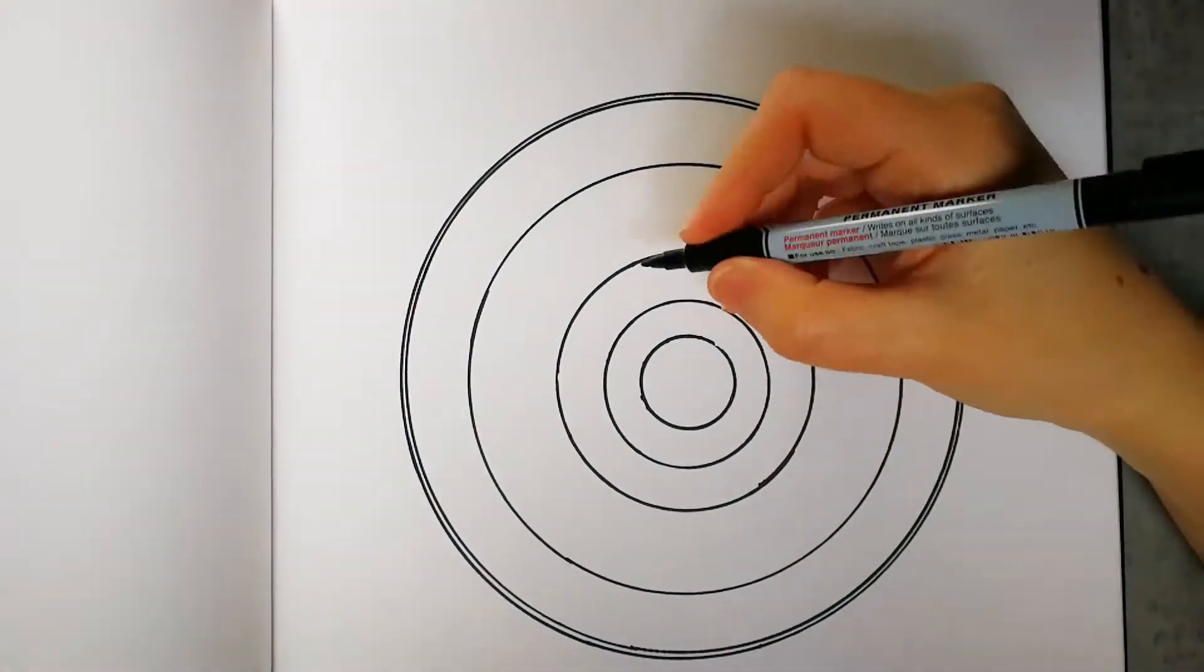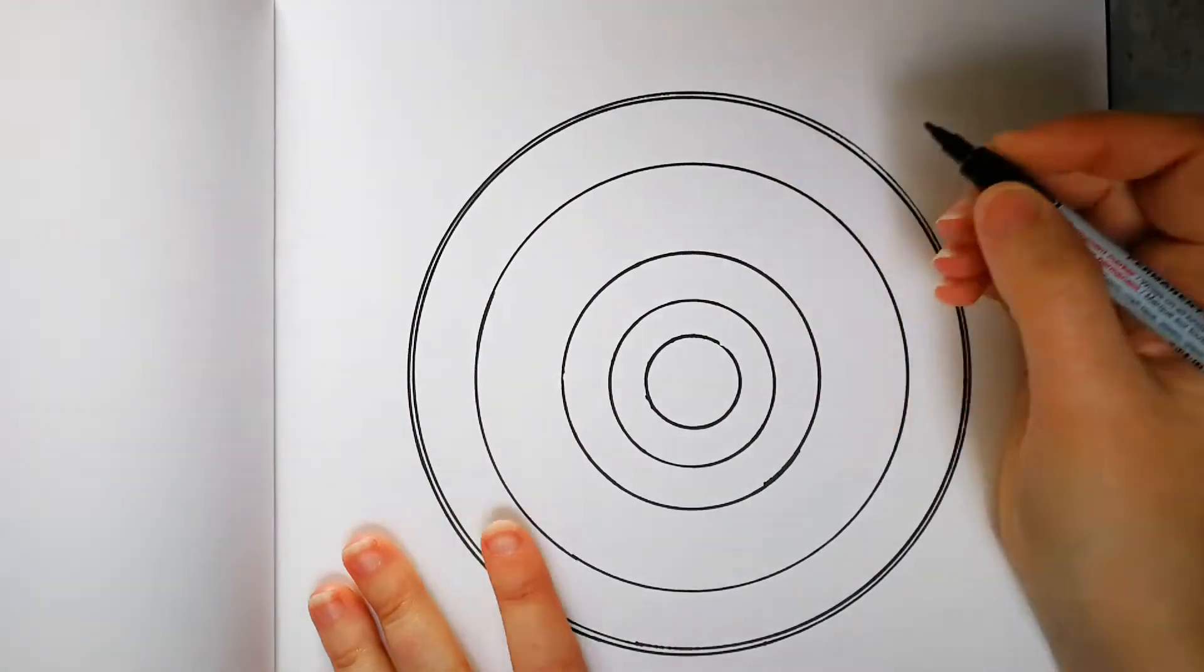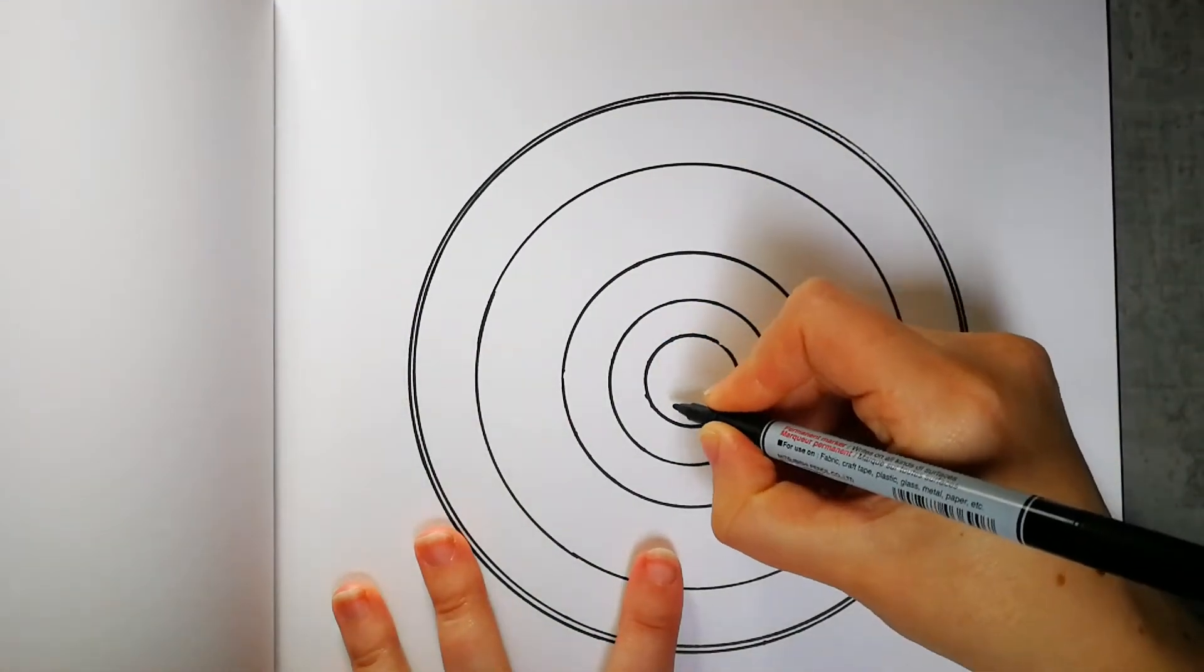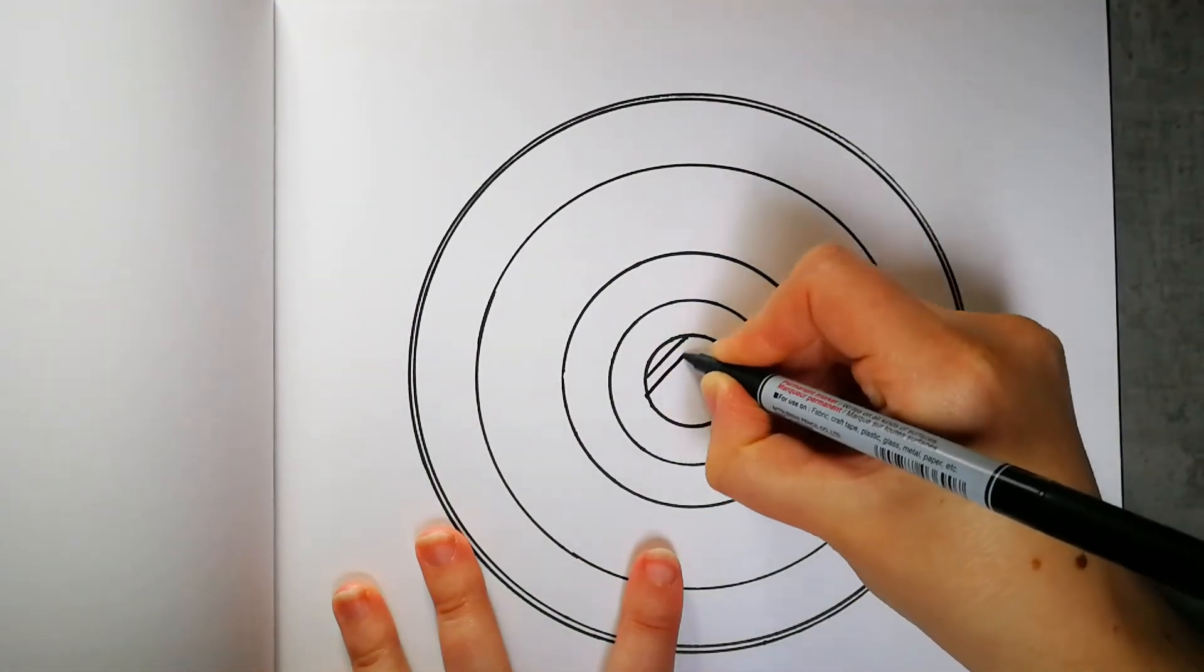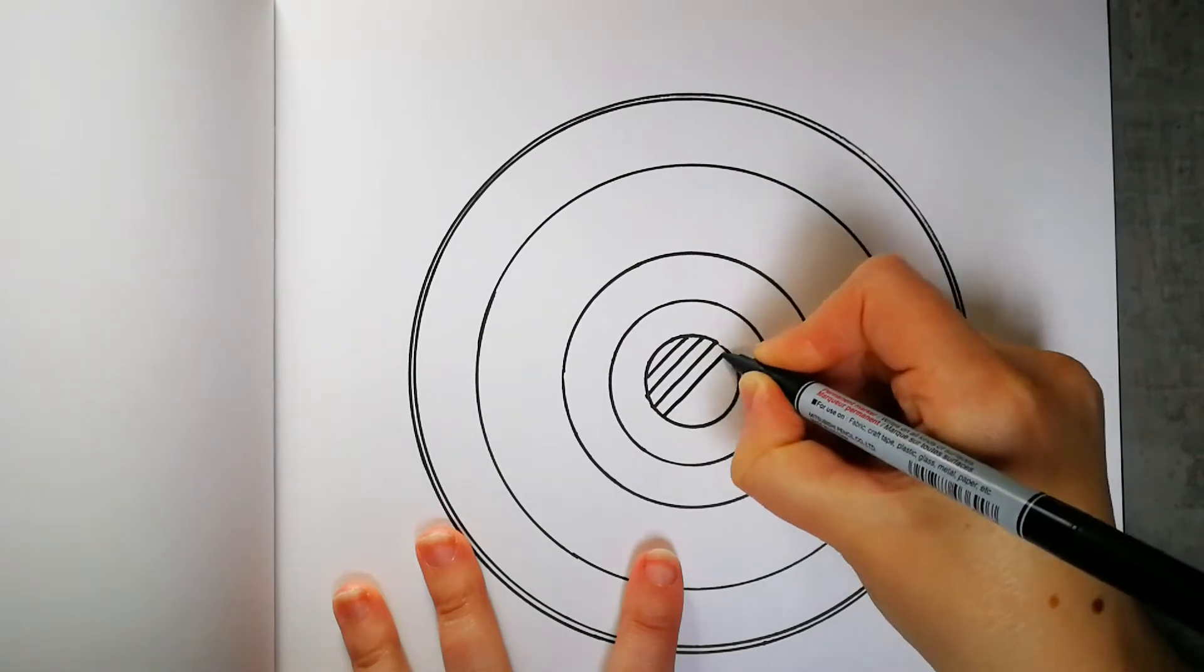Here's where the creative magic happens. Draw a pattern in each of the layers, anything that springs to mind. Sometimes I like to start with a flower in the center or a spiral or a star.